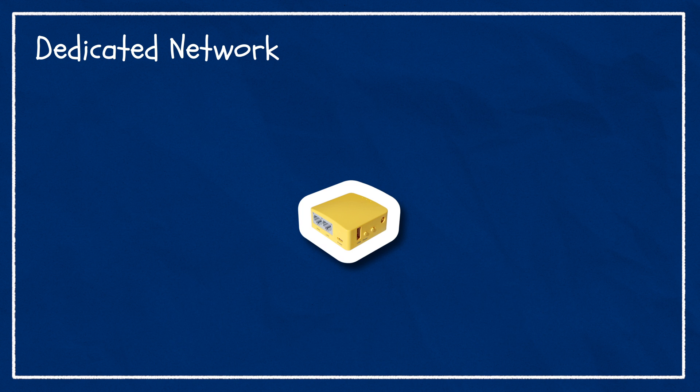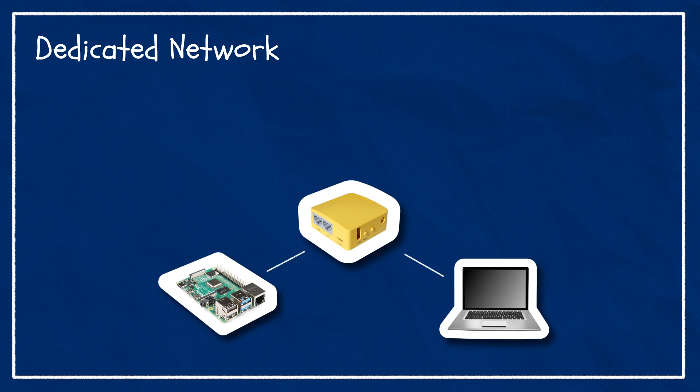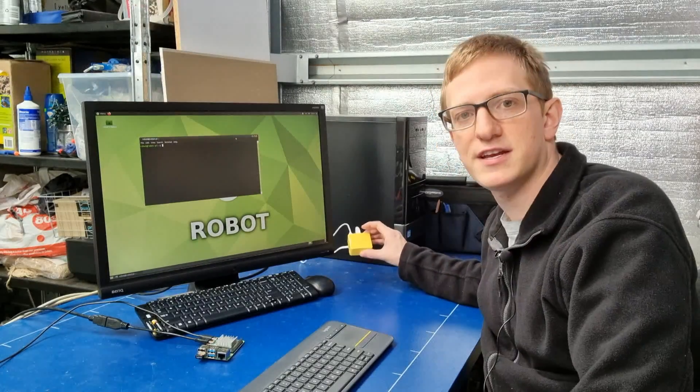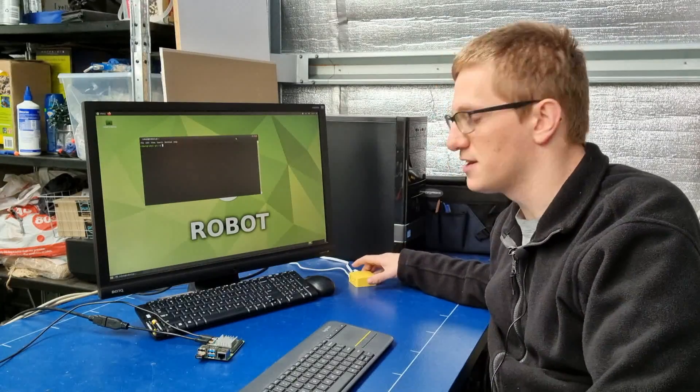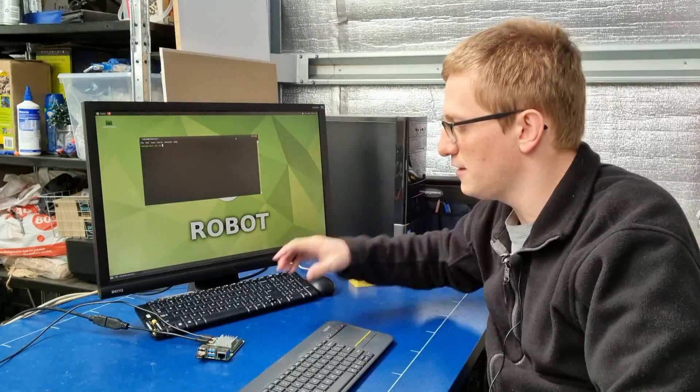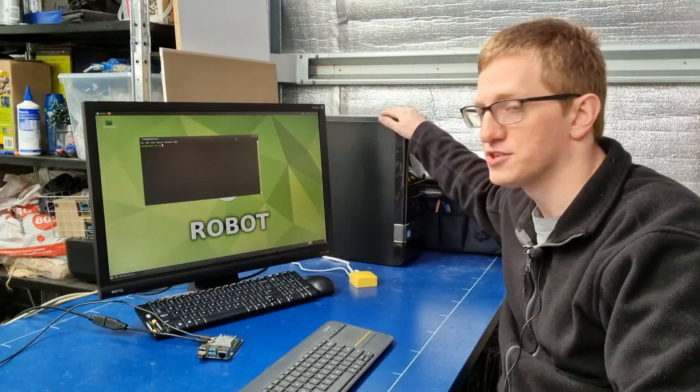It's not too hard to see how similar that is to our robot scenario. We want our robot, base station, and any other related devices on their own solid little private network with internet access optionally bridged from an external source. For my setup here I've got this little travel router configured to connect to my home Wi-Fi. It'll share that internet connection to its own network via ethernet to the base station and via Wi-Fi to the Pi. I've also got it powered over USB from the base station. I seriously recommend it for how much it simplifies things.